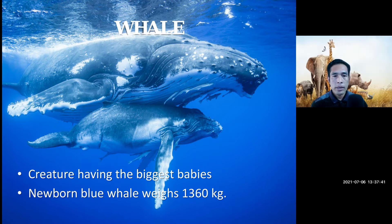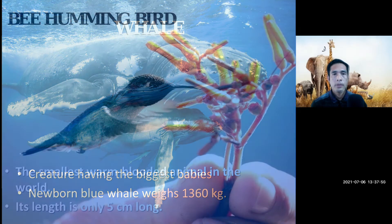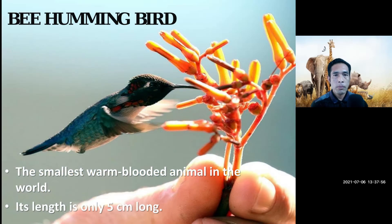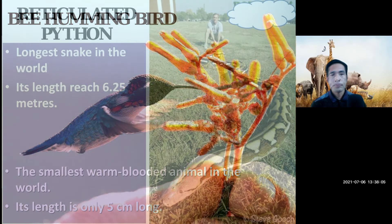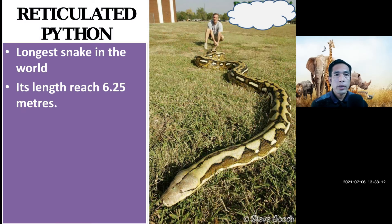The blue whale is the creature having the biggest babies. Its newborn babies weigh about 1360 kg. The hummingbird is the smallest warm-blooded animal in the world. Its length is only five centimeters long.